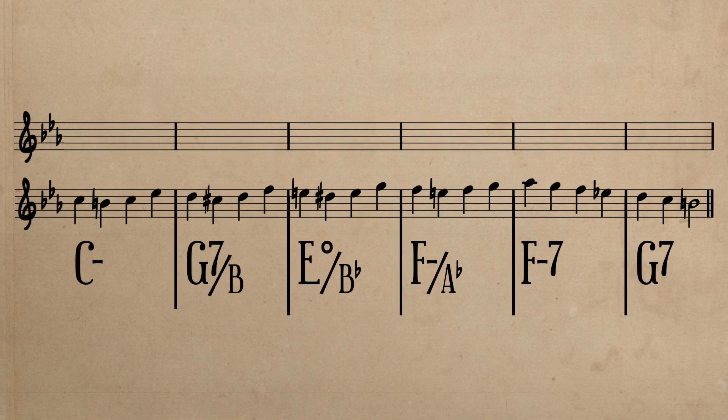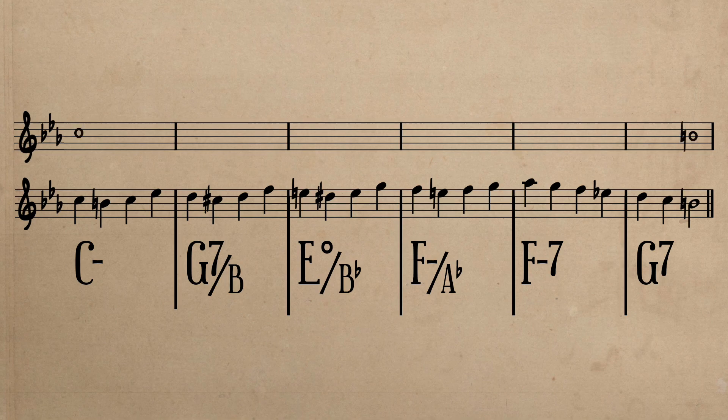In the first six measures, the core idea is C descending to B natural. In the first embellishing layer, we hear an ascending line constructed with conjunct motion. Upon reaching A flat, however,